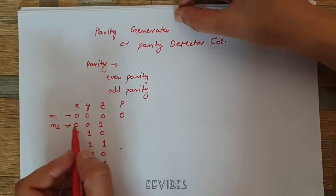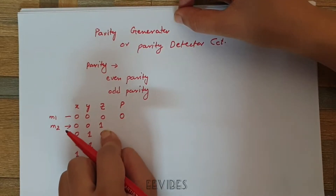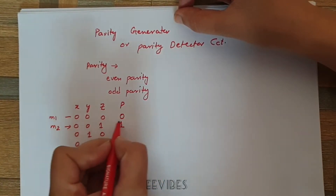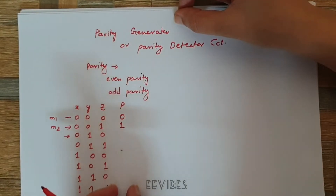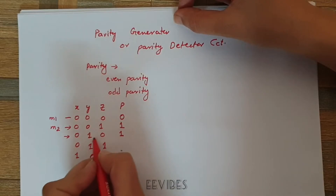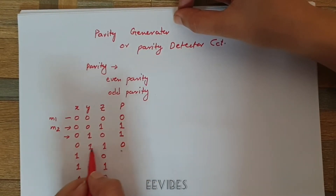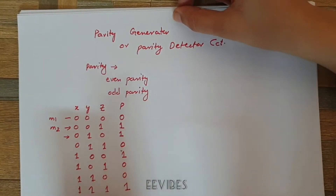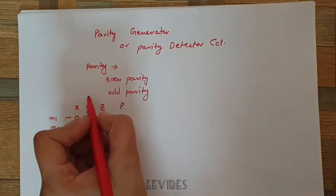The second message has bits 0, 0, and 1 — only an odd number of ones — so to make it even parity the parity bit is set to one. Continuing similarly: one is placed where only a single one is present in the message, zero where there are already an even number of ones, and so on. In this way the parity generator circuit works for the even parity concept.